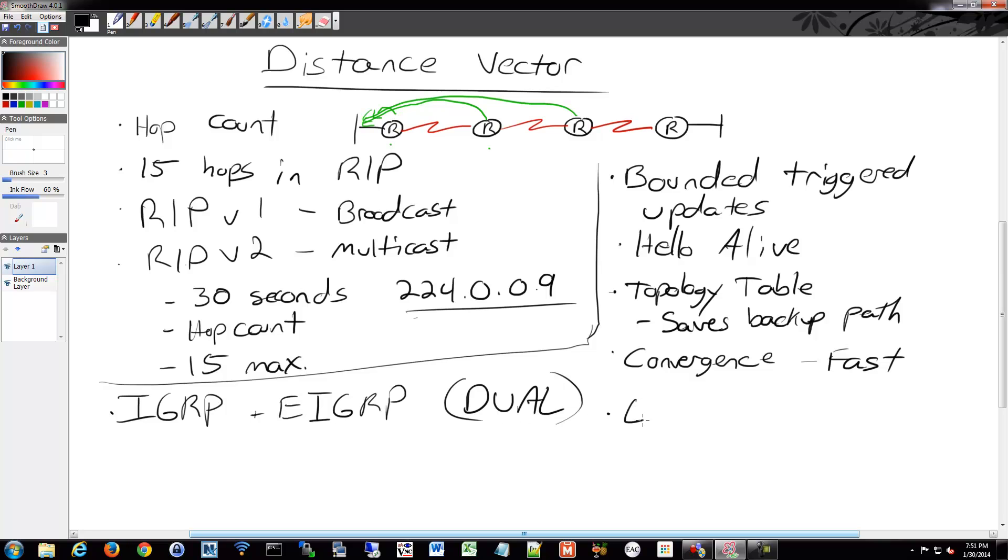It's also layer 3 independent. So you can run IPv4. You can run IPv6. You could run IPX over this if you really wanted to. You could run AppleTalk. You could share whatever you want. Any sort of layer 3 protocol through EIGRP. So that's a nice feature of that.